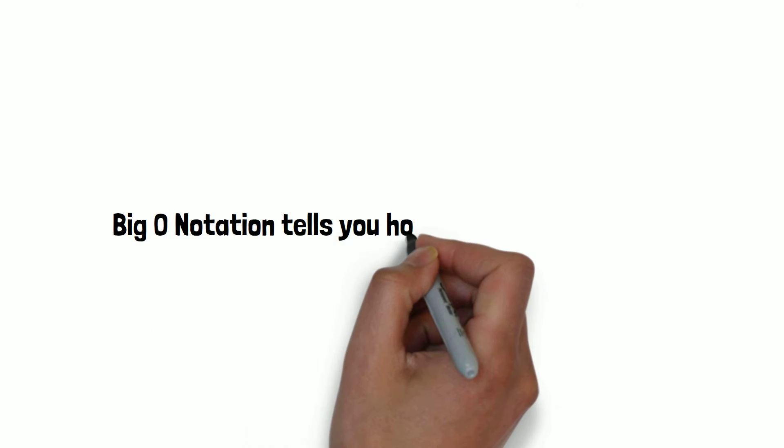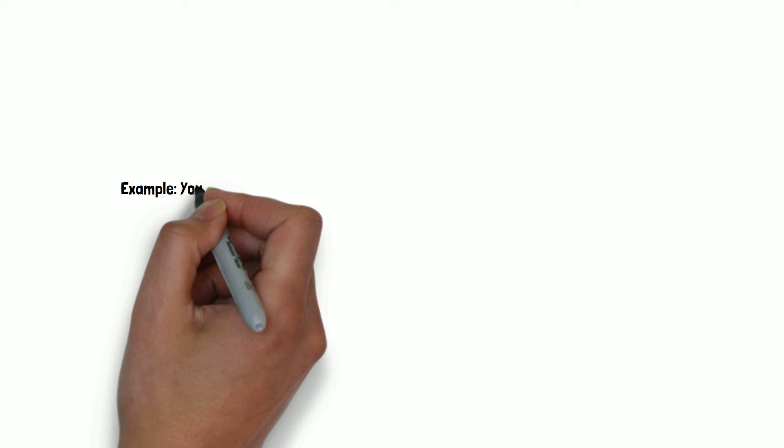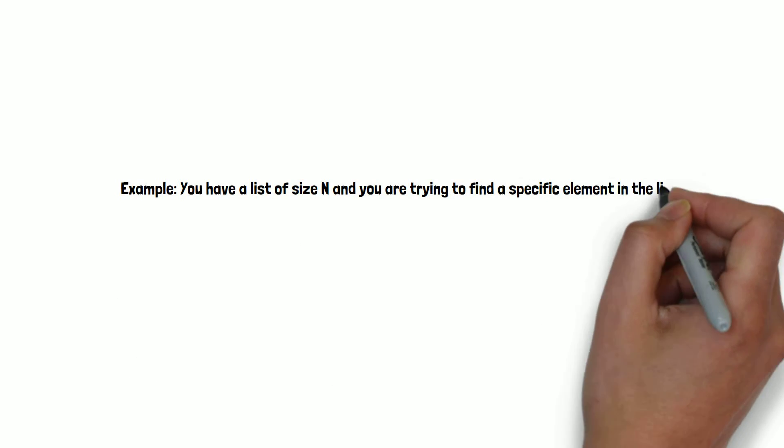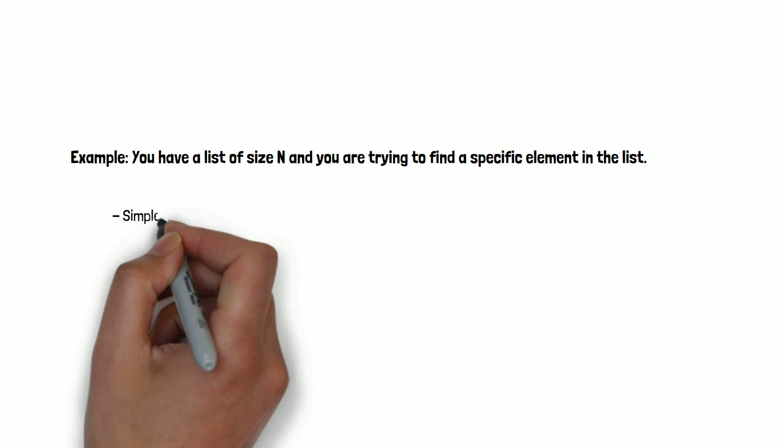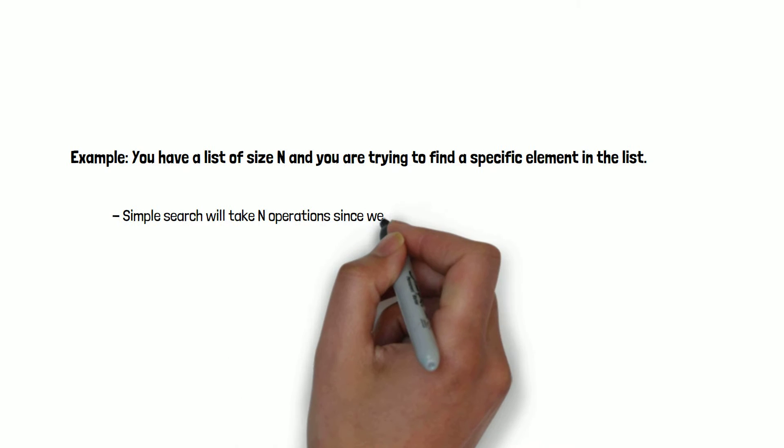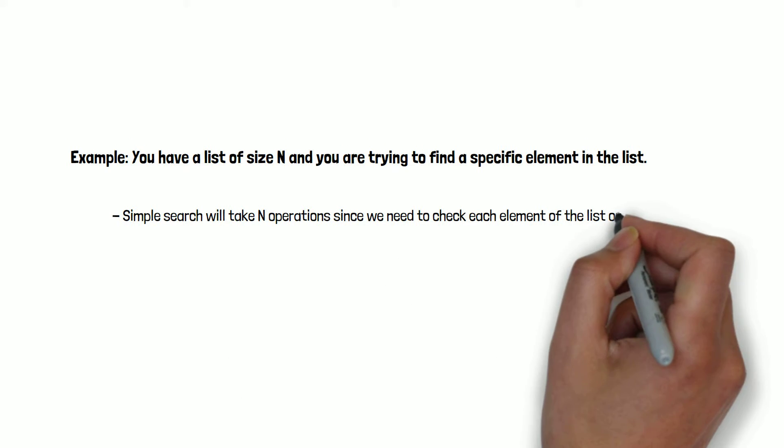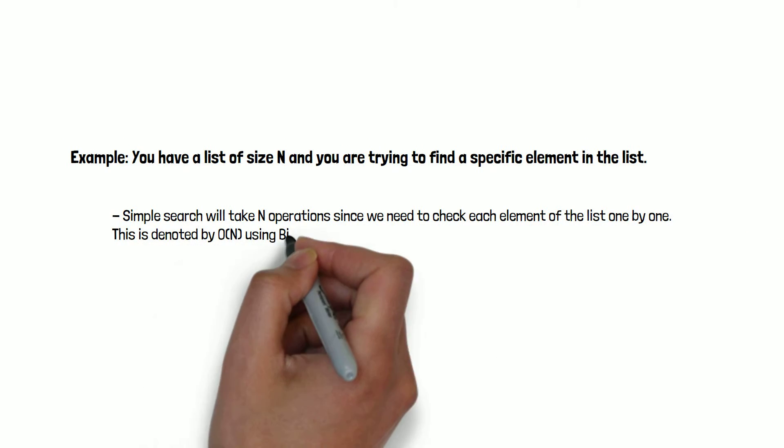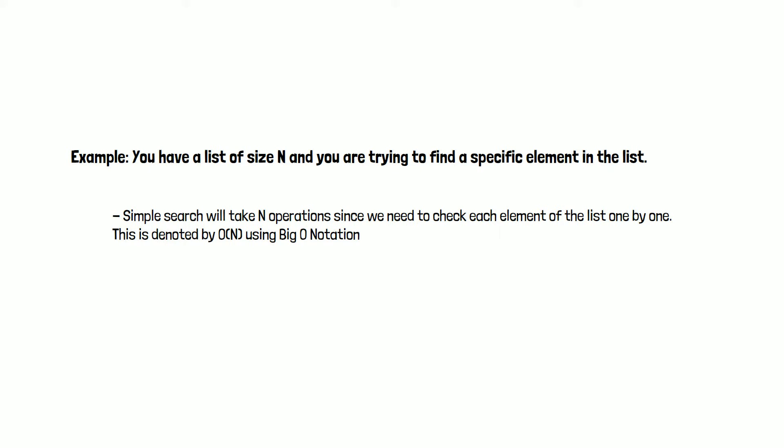Big O notation tells you how fast the algorithm is. For example, you have a list of size n. Using simple search will take n operations since we need to check each element. So, the runtime will be O(n).